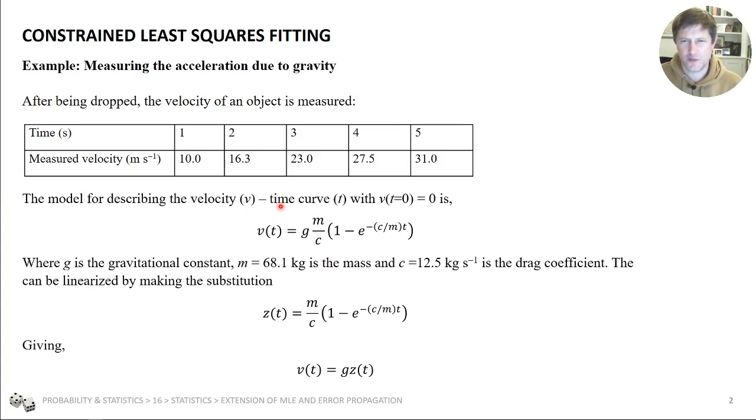So the model for describing this is that the velocity is equal to the gravitational constant multiplied by the mass of the object divided by c. c is a drag coefficient because it's falling through the air. And then there's a transient response. So it's 1 minus exponential of c divided by m times t.